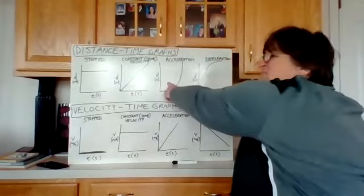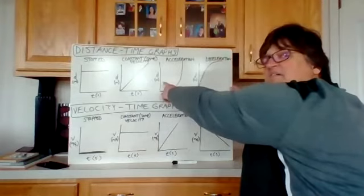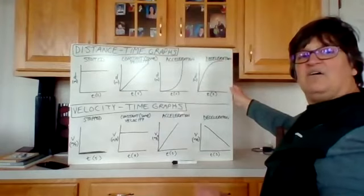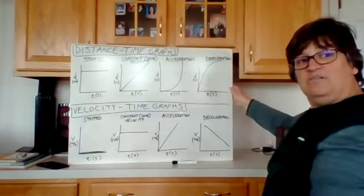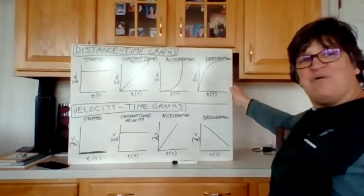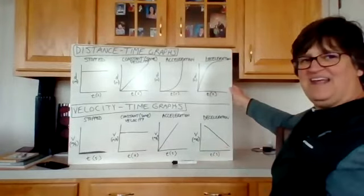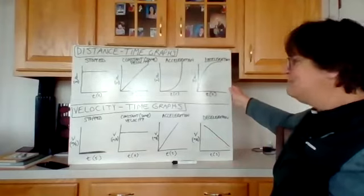This one is half of a parabola, but it is upward. This one is half of a parabola, but it is facing down. And that has everything to do with accelerating, positive, and decelerating, negative.